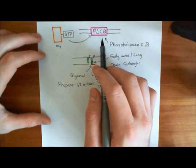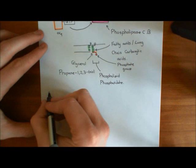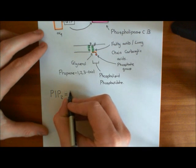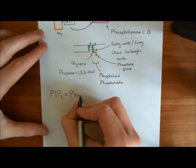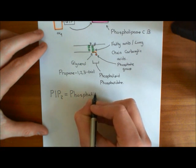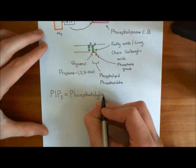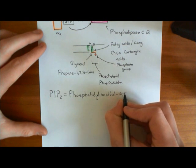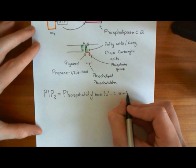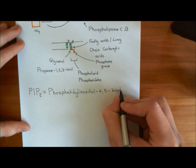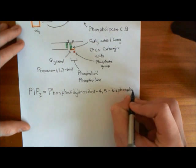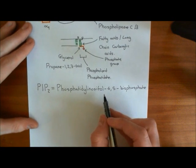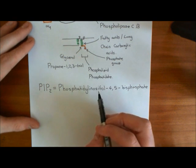Phospholipase C beta is going to break down a component of the membrane known as PIP2. PIP2 is short for a rather long name, which is phosphatidyl inositol 4,5-bisphosphate. The PI of PIP2 stands for phosphatidyl inositol, and then the P2 stands for the fact that you've got two phosphate groups bound to that phosphatidyl inositol molecule.